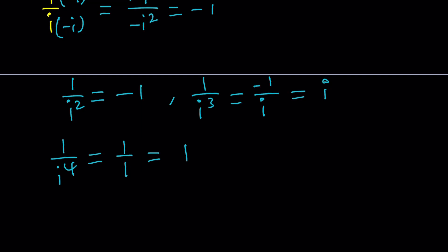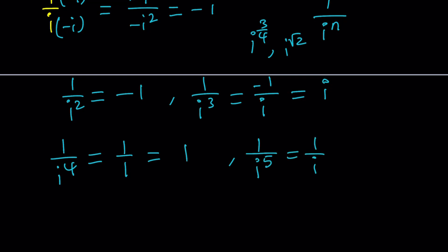So what happens with powers of I? They alternate and repeat periodically. The same thing happens with the reciprocals, because reciprocals of powers of I are also powers of I, just in a different way. Think about what happens with 1 over I to the power N. The rule is: 1 over I to the power 4N plus K is the same as 1 over I to the power K. N and K are integers, so this works.